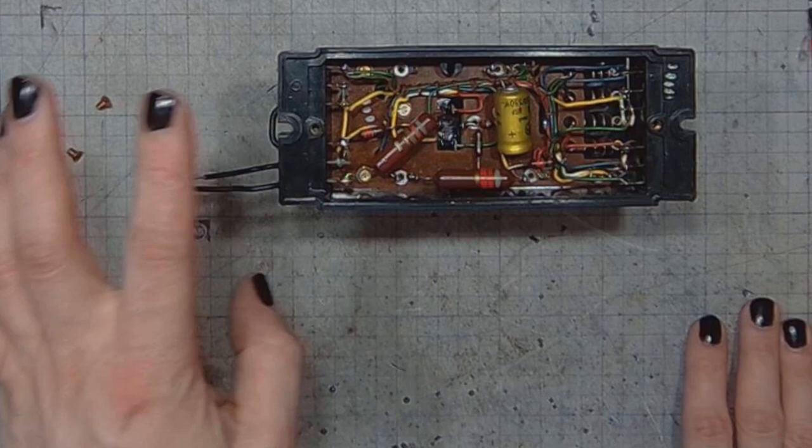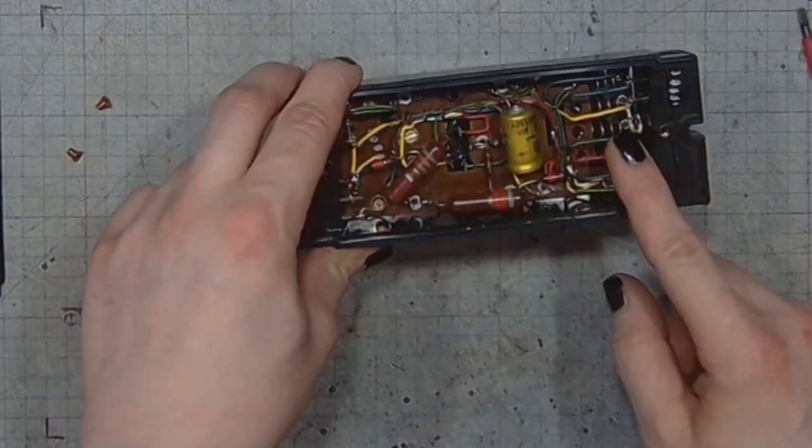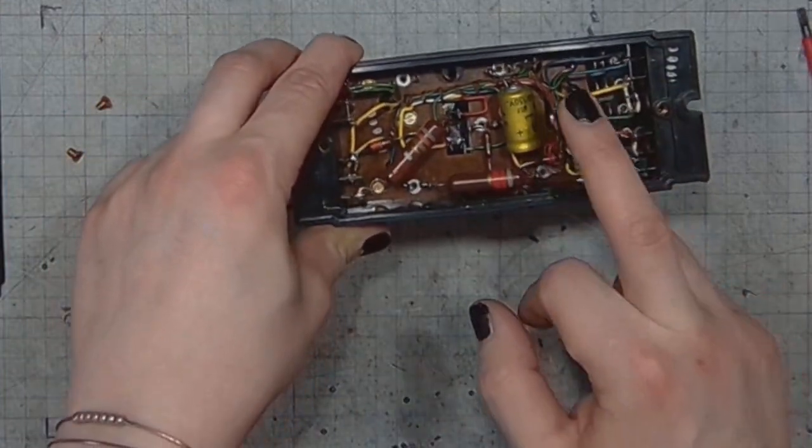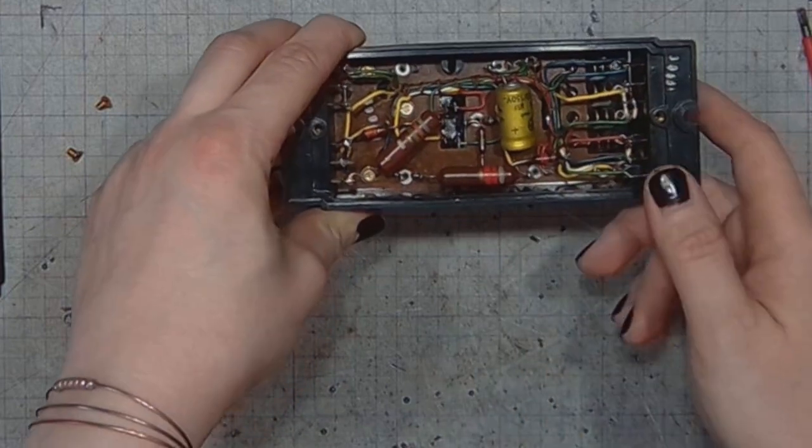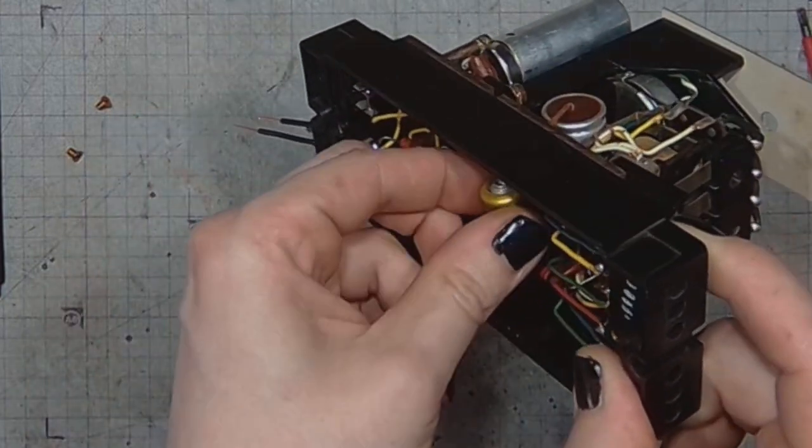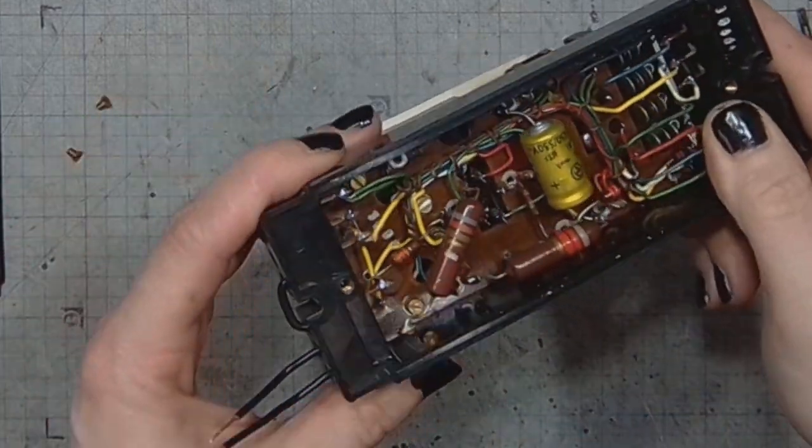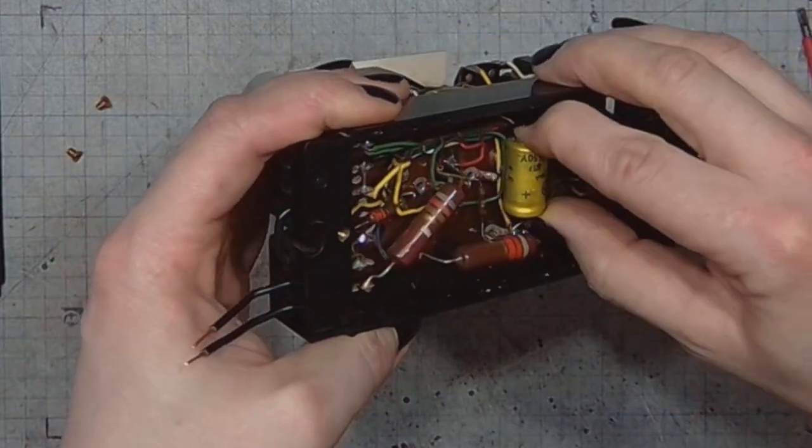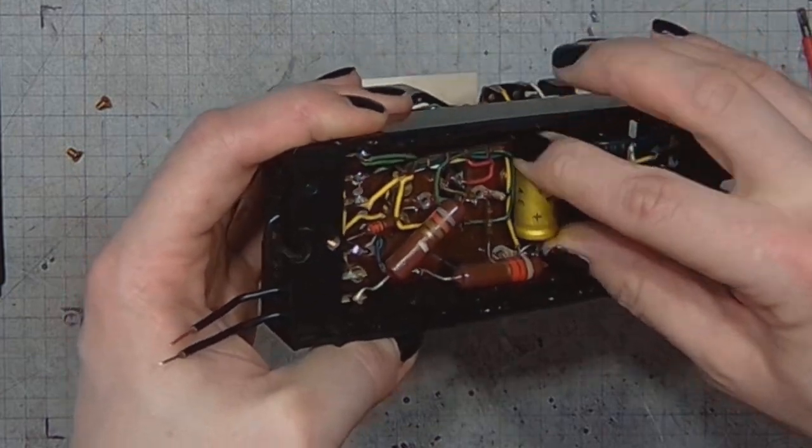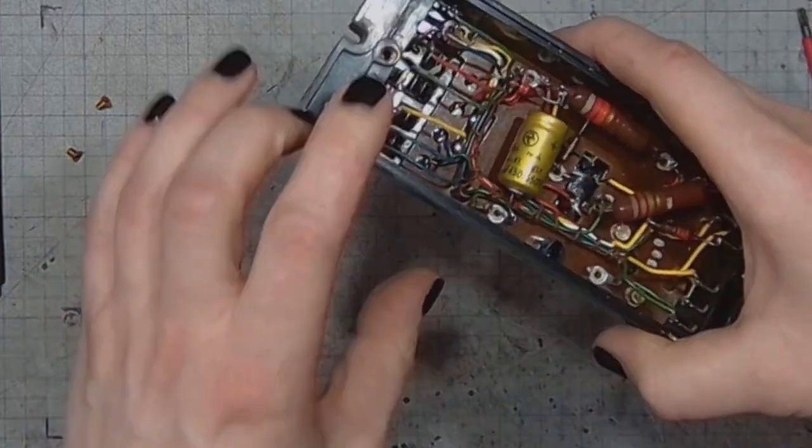Lifting the cover plate reveals a few resistors and an electrolytic capacitor. The electrolytic is 3 microfarad, 450 volts DC working, 550 volts peak.